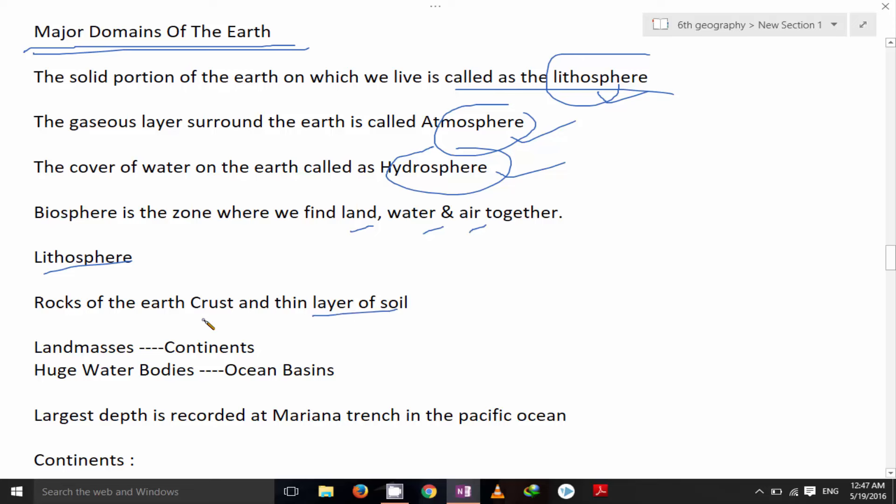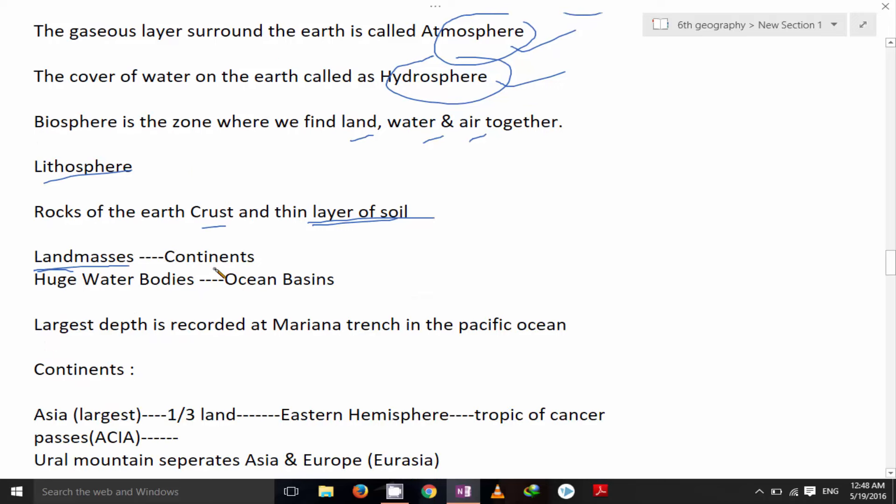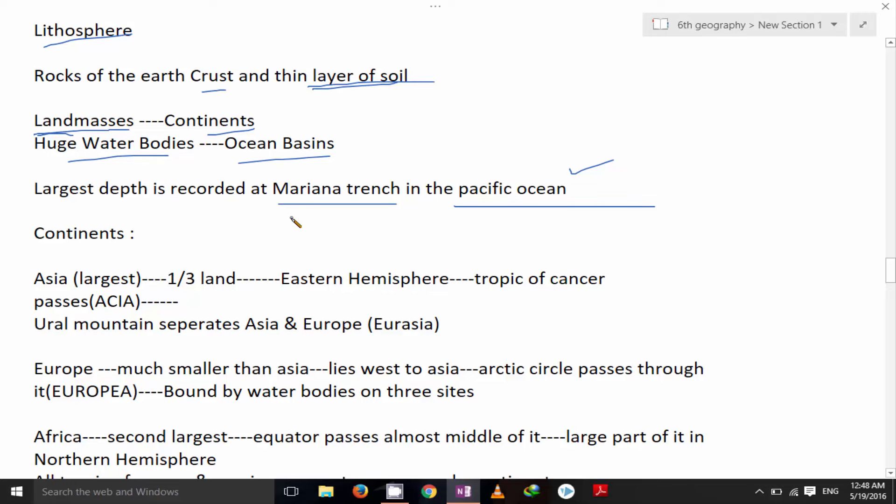Crust and layer of the soil. Land masses we call continents and huge water bodies we call ocean basins. Largest depth is recorded at Mariana trench in Pacific ocean.